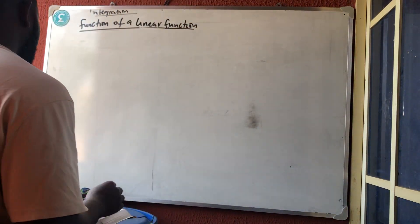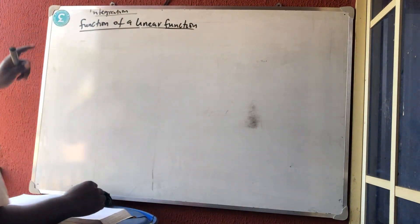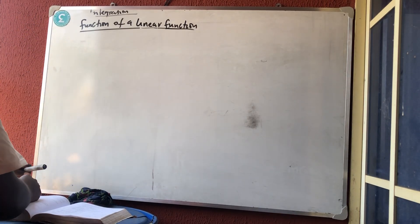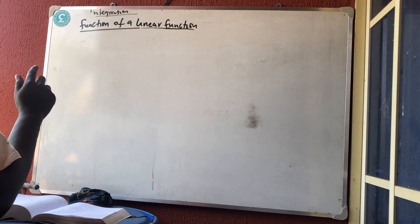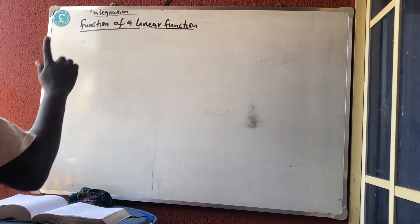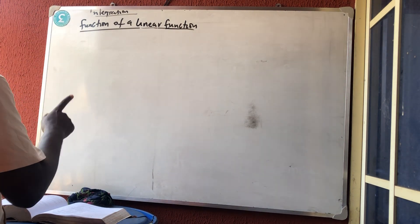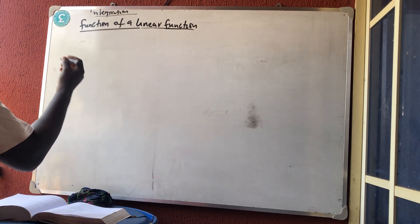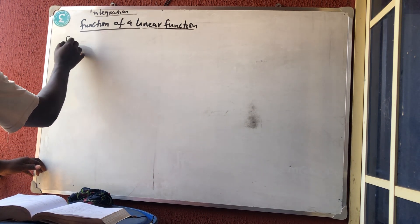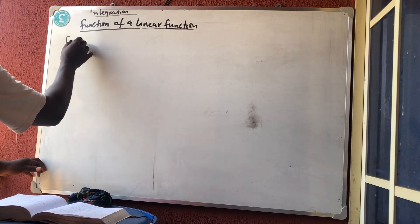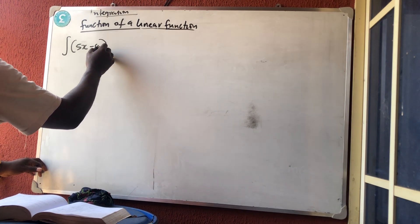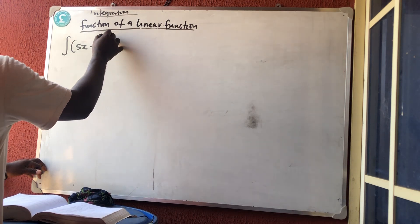Good afternoon and welcome to the continuation of differentiation. Today we'll be talking about a function of a linear function. It must be linear in the sense that the variable will not be raised to power 2 — it will just be raised to power 1. An example is the integration of (5x − 4) raised to power 6.